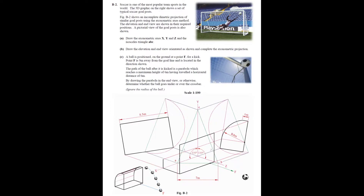The first two parts of this follow the standard format as every other question. Part A is to draw the axonometric axis X, Y and Z and the isosceles triangle ABC. It's isosceles because we're told it's a dimetric projection. Part B is to draw the elevation and end view orientated as shown and complete the axonometric projection. Part C, although it looks quite wordy and long, is quite straightforward and we'll come to that later on.